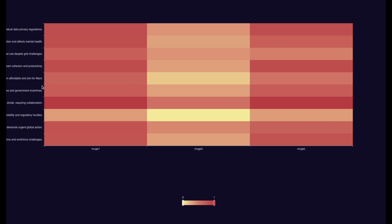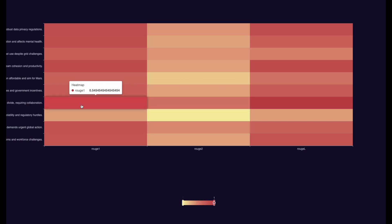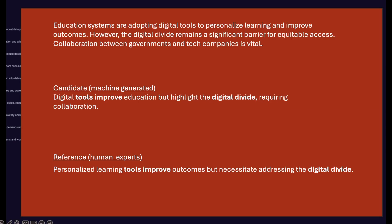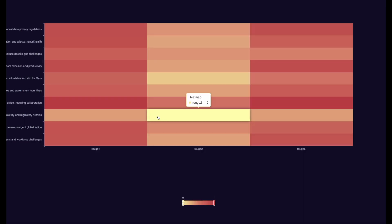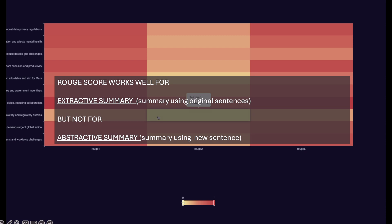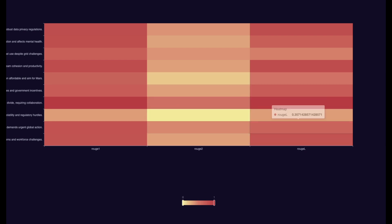We can also visualize the ROUGE score using a heat map. Here on the y-axis you have the individual sentences, and on the x-axis you have the three ROUGE scores. The color of the heat map will be more red for higher values of ROUGE score. For example, this summarization of a statement on the education system and digital divide has been correctly summarized and has got a good ROUGE score — you'll also see that many words are matching. However, if you take the sentence on cryptocurrency, it has not received a very good ROUGE score; there are many words such as volatility and regulatory which are not there in the reference summary. The ROUGE score works well for extractive summarization where the summary is made using words from the original sentence. However, it would not work well for abstractive summarization where the summary has new sentences while keeping the essence of the original.